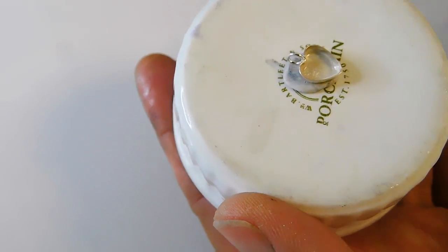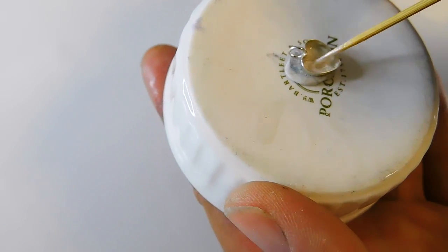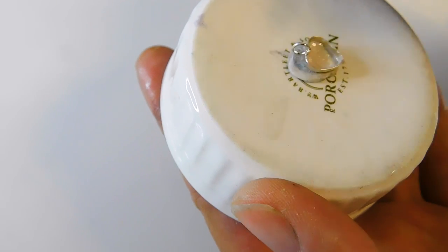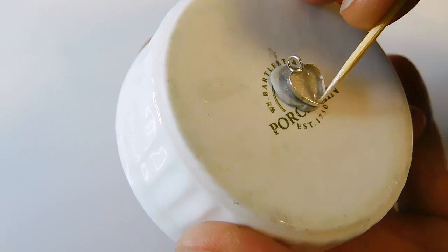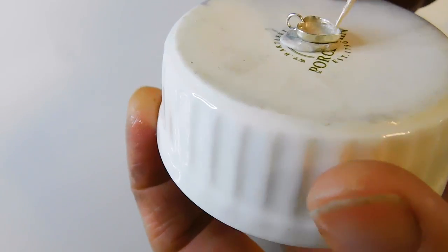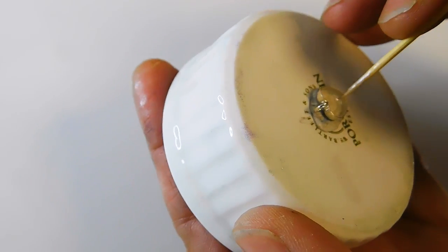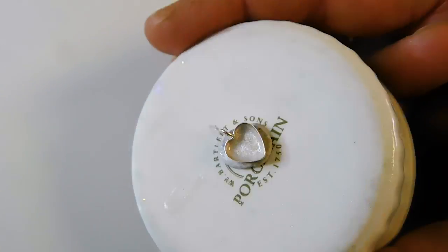Start by preparing the bezel cup with a very thin layer of resin with your color mixed in. The thinner the better. Cure this for a minute or so under a UV nail lamp until it's hard when you poke it with a cocktail stick.